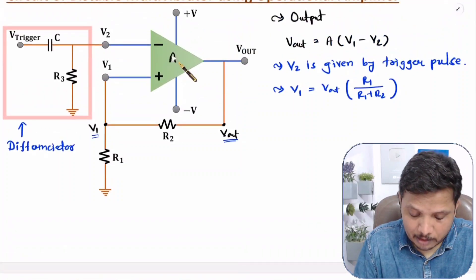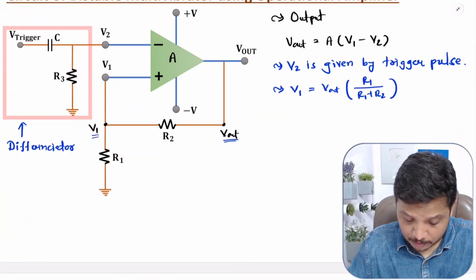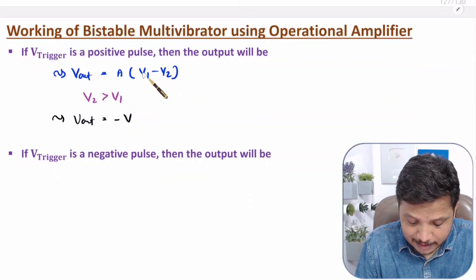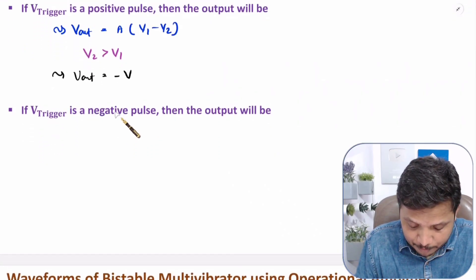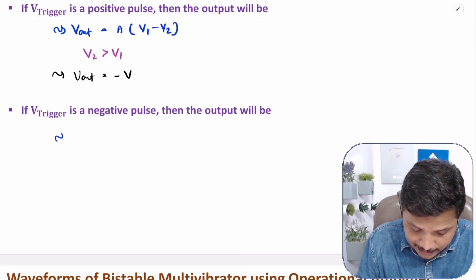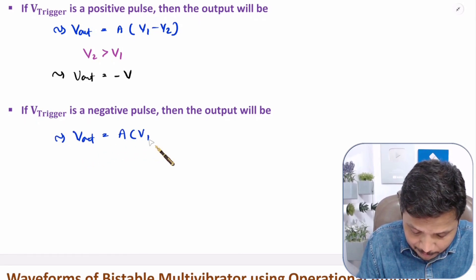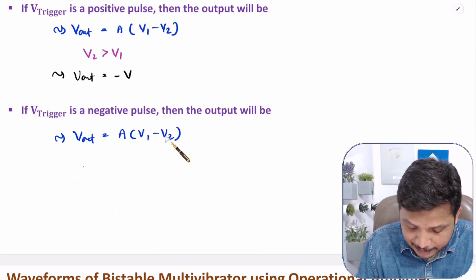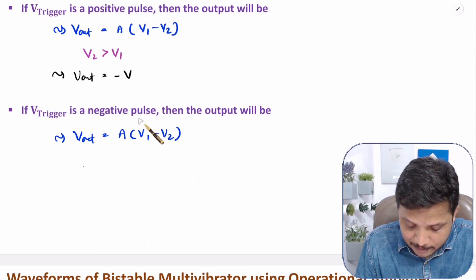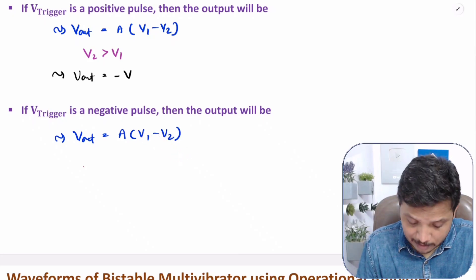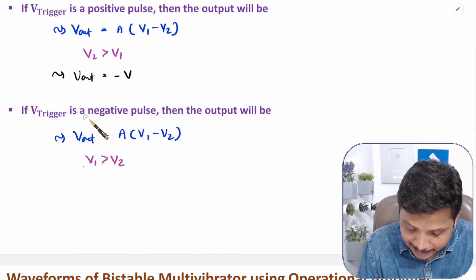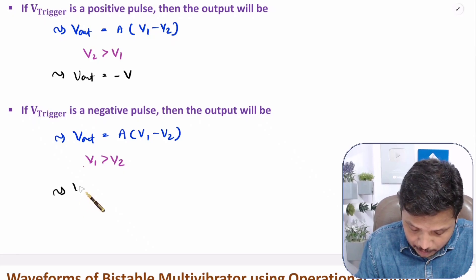And what will happen if you have a negative pulse? In that case, Vout is A into (V1 minus V2). If you have a negative pulse, V1 will be greater compared to V2. The reason is you have a negative pulse, so V2 will be negative voltage — negative minus negative becomes positive — so V1 plus positive that will happen. V1 will be greater compared to V2 during a negative pulse. Here your output is getting saturated to plus V voltage at output.